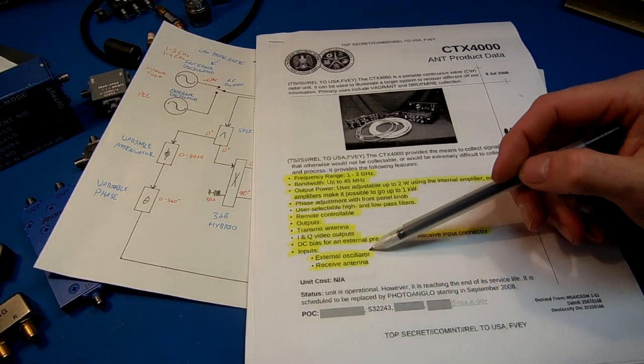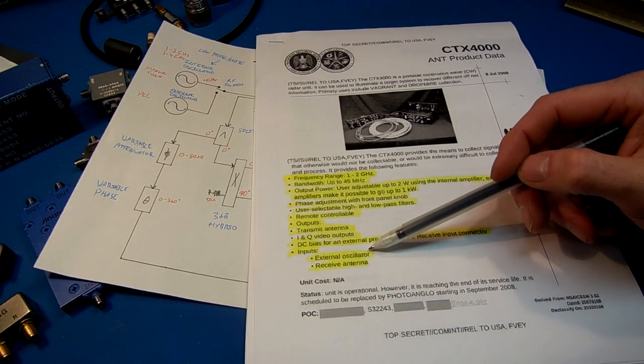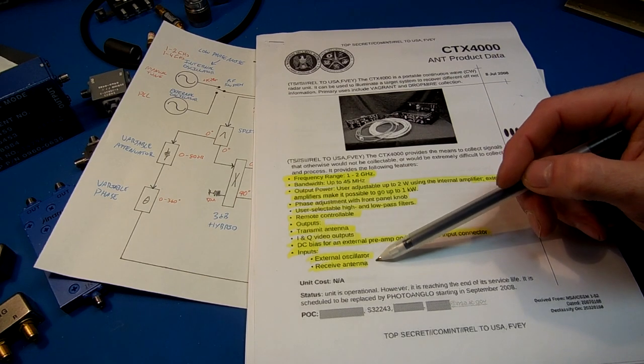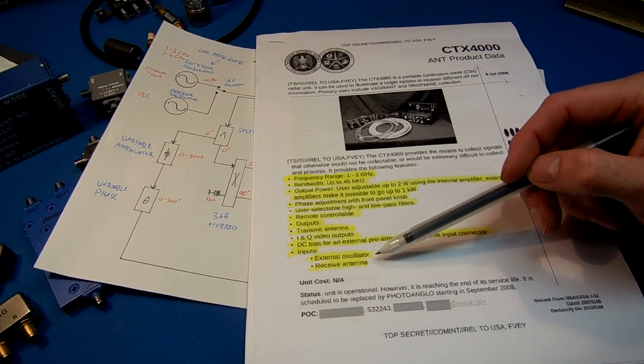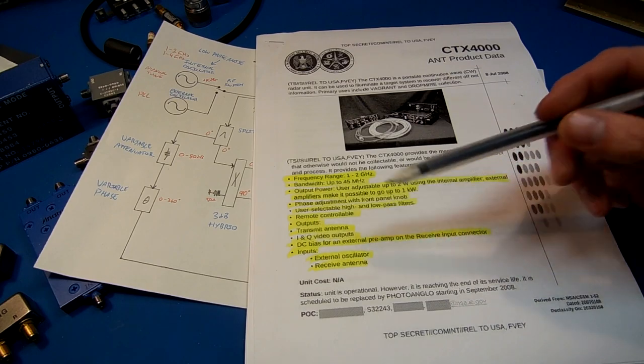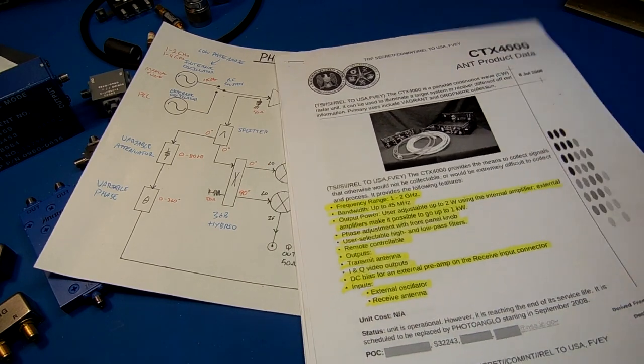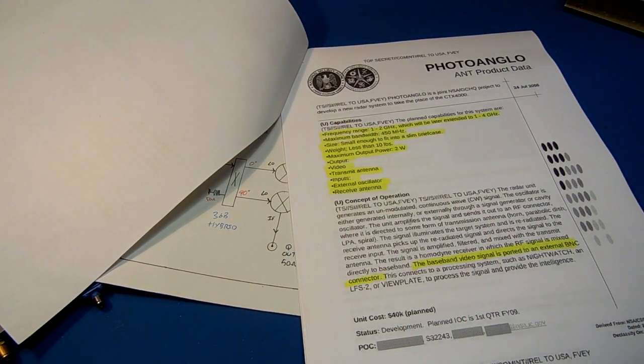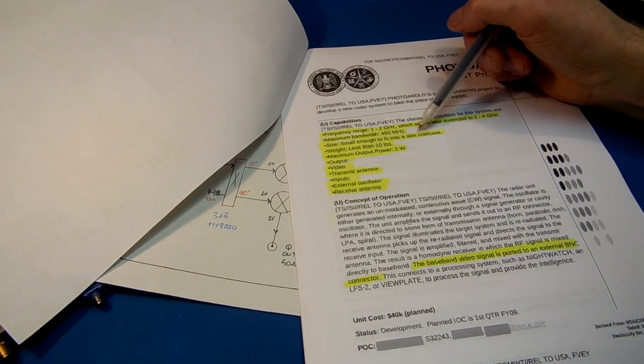External oscillator. You might want to have like a low phase noise, phase locked oscillator. That might not be external, so you just want to be able to switch over to the external oscillator at some point. The updated Photo Anglo unit is just basically smaller. There's all the same stuff, just smaller.